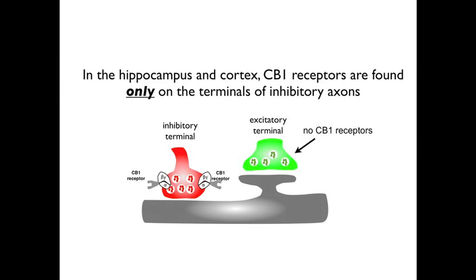The suppressive effects of endocannabinoid signaling were first shown by a phenomenon called depolarization-induced suppression of inhibition. Before describing depolarization-induced suppression of inhibition, I need to point out that in cortical and hippocampal cells, cannabinoid receptors — that is the CB1 receptors — are found only on the terminals of inhibitory neurons and not on excitatory neurons. In other areas of the brain, CB1 receptors are also found on excitatory cells, but not in the hippocampus and cortex. I will first describe the phenomenon itself, and then describe the mechanisms that account for the results.